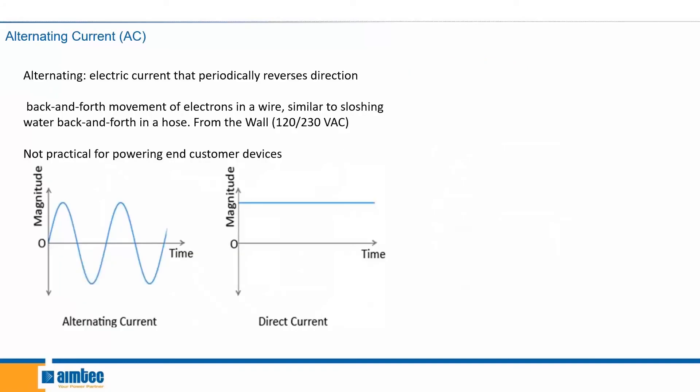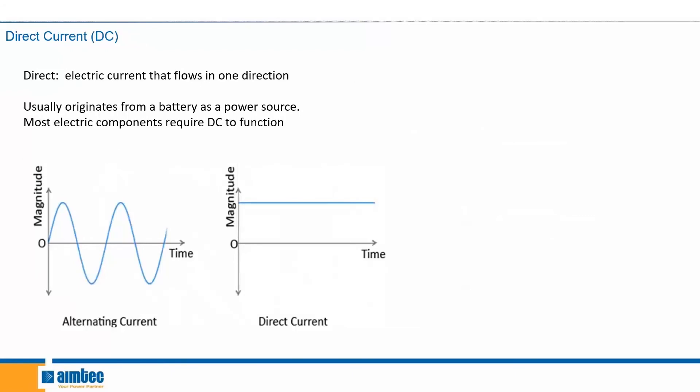The first type of current we're going to look at is alternating current. This type of current periodically reverses directions — you can conceptualize this by thinking of water moving back and forth in a basin. AC current comes from the wall outlet, so anything you plug into the wall is directly hooked up to alternating current, but this type of current isn't practical for powering devices. Looking at the diagram, we have alternating current on the left depicted as a sinusoidal wave, and direct current on the right depicted as a simple straight line that does not vary. Direct current flows in one direction and usually comes from a battery or any alternate power source.